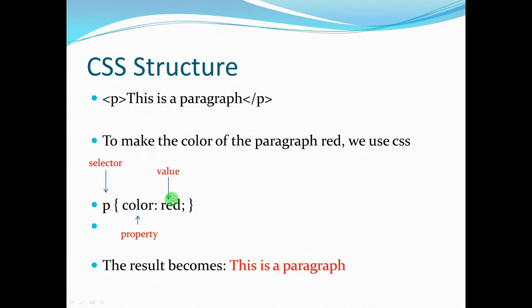Of course, on the right side of the color is the value you want to apply. So in this case, we want to make the text red. Between the property and the value, there is a colon that separates it, and after the value, there is a semicolon that ends the statement.